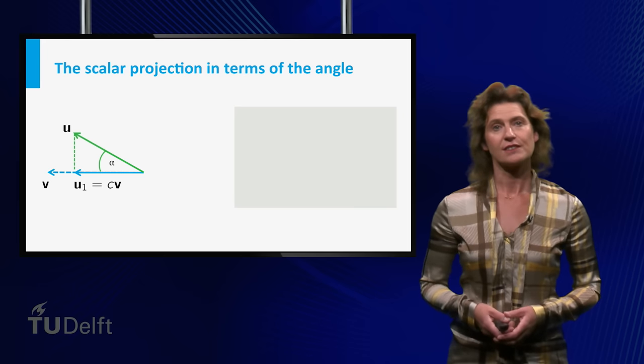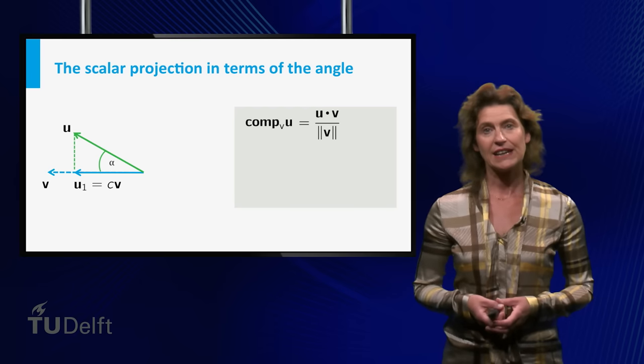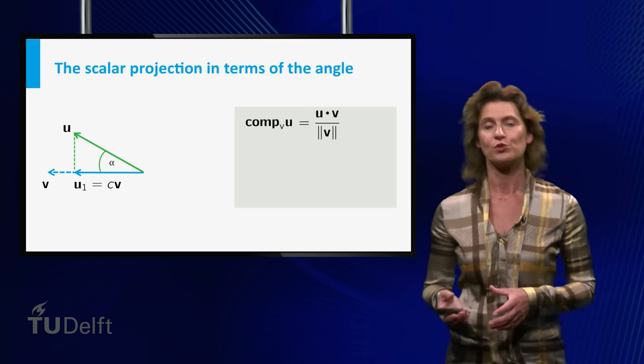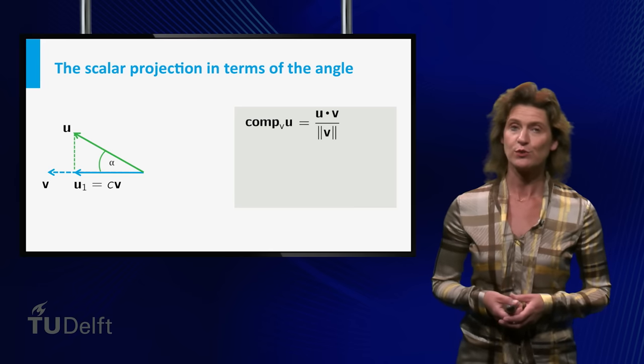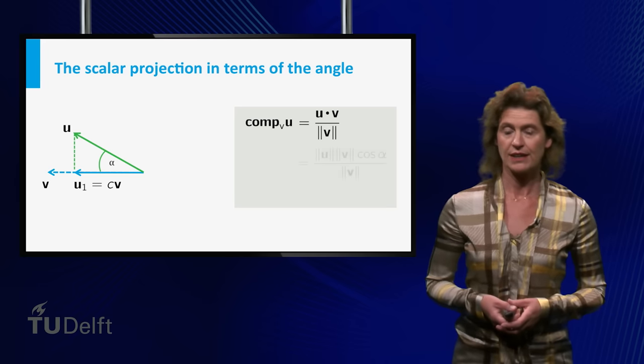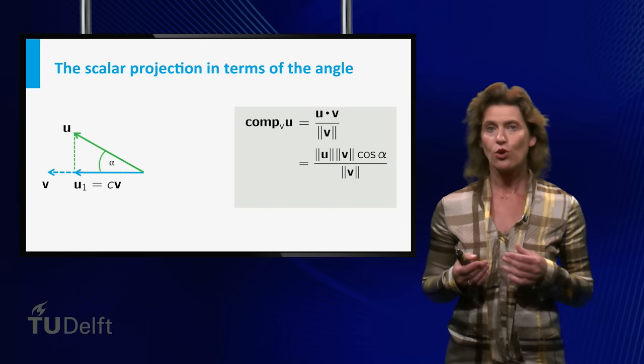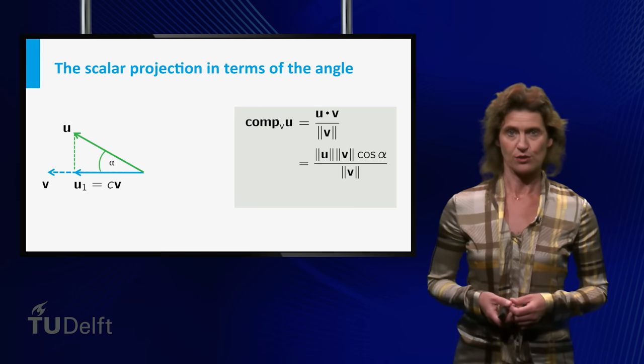The fact that the scalar projection is a signed magnitude can be seen from the relationship between the scalar projection and the inner product of u and v. This, as you know from the geometric definition of the dot product, is equal to the length of u times the length of v times the cosine of the angle between u and v divided by the length of v.